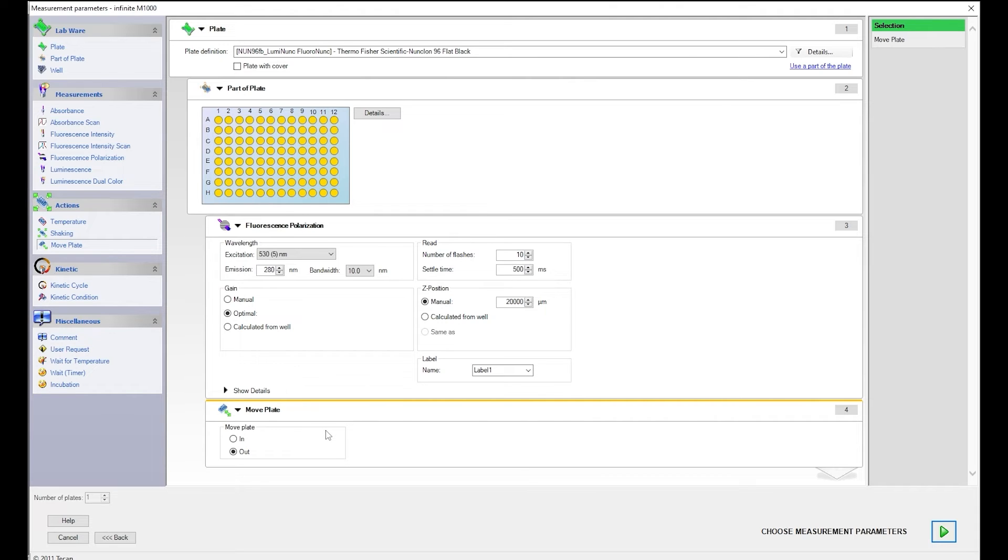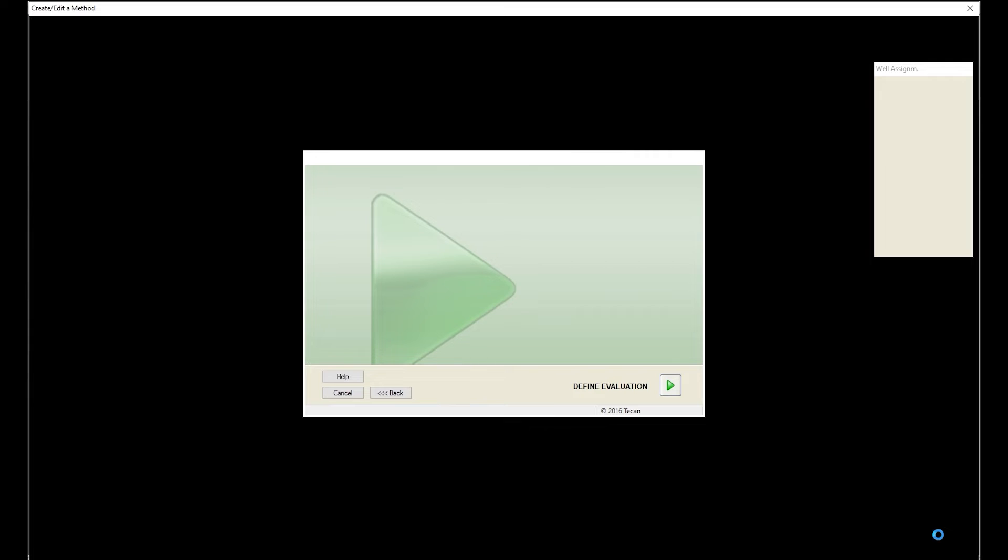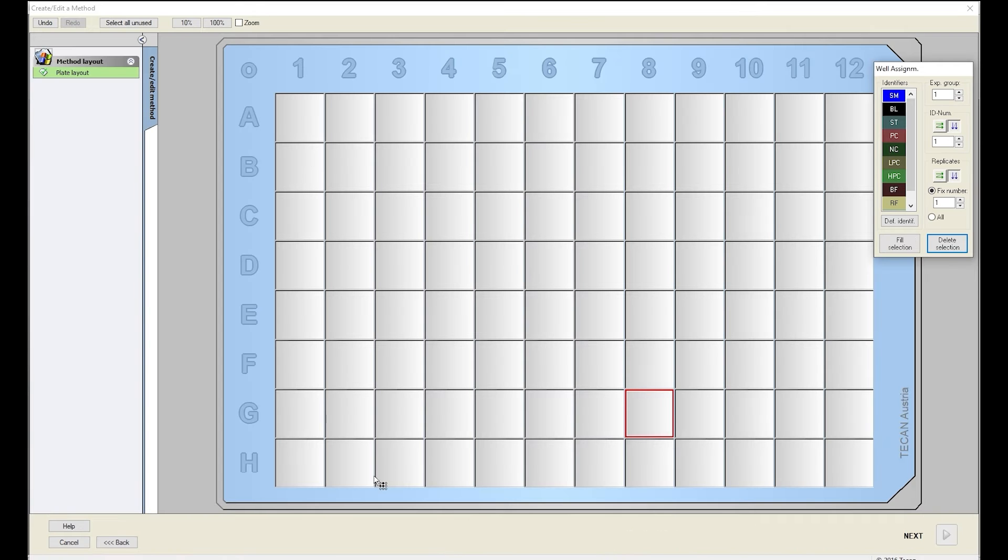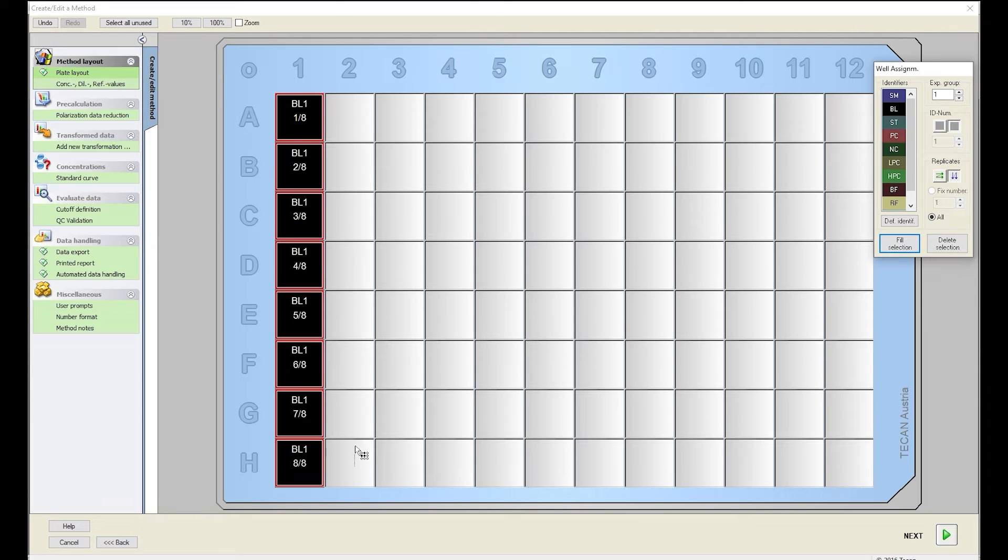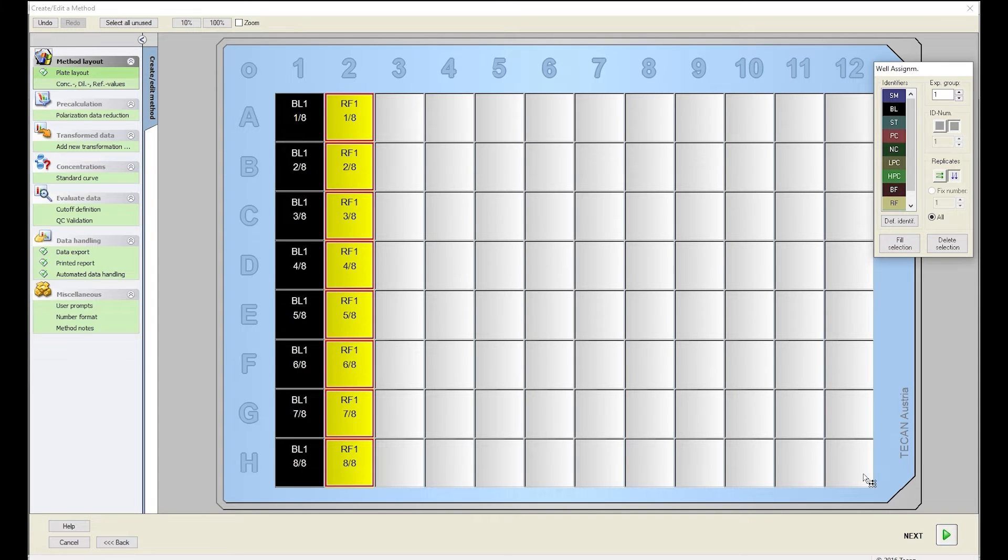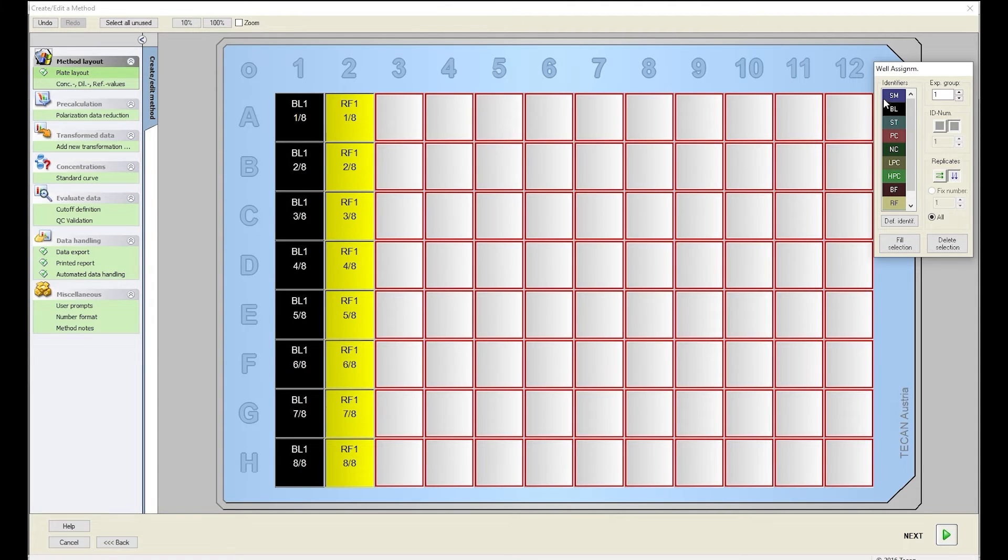Your method is ready to be used. Select Next. Select your blank, reference, and sample wells by highlighting the respective wells and selecting Fill. In a 96-well assay, we recommend column 1 for blank, column 2 for reference, and columns 3-12 for sample.